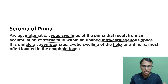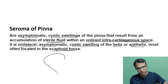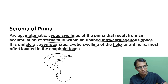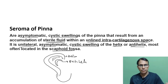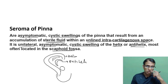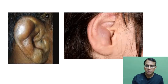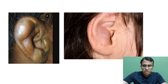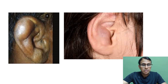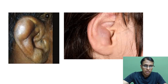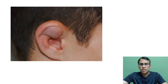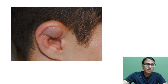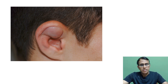The scaphoid fossa is the area between the helix and the antihelix. The first image shows a seroma typically at the scaphoid fossa, and the second shows one at the cymba concha. Another image shows a very clearly cystic appearance at the scaphoid fossa. This condition is autoimmune or immune-mediated in origin.